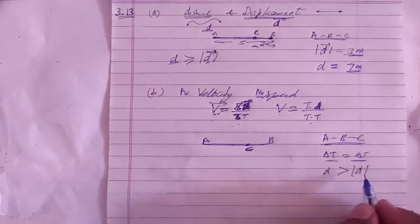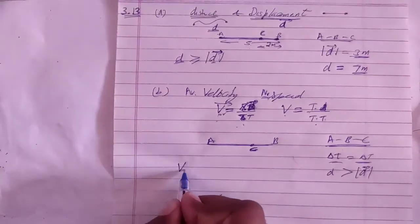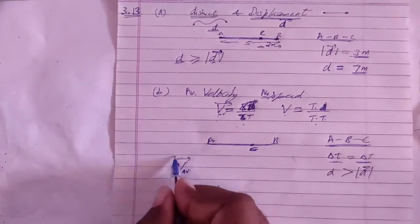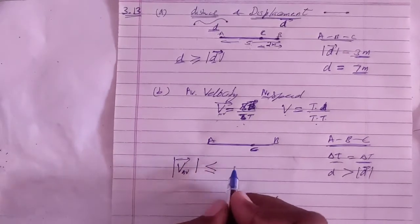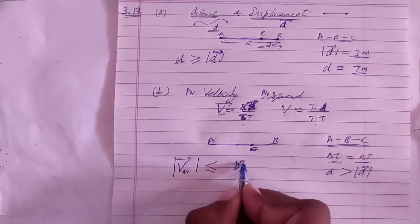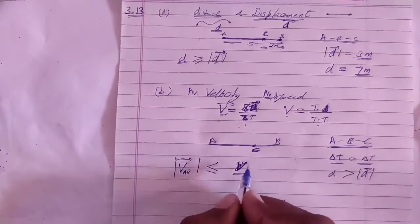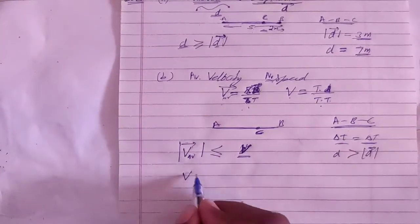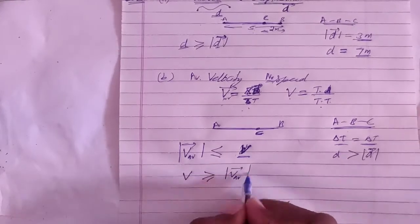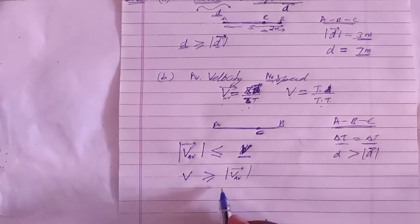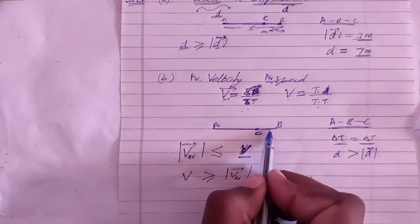Since total displacement is always less than or equal to total distance, it follows that the magnitude of average velocity is always less than or equal to average speed. That is: average speed ≥ magnitude of average velocity.